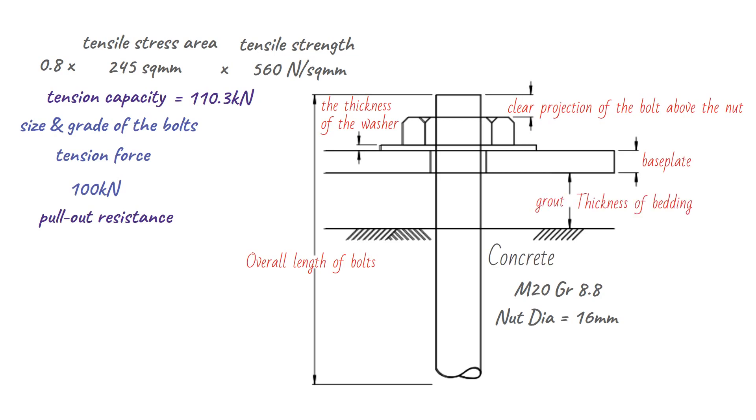For example, let's say we have an overall length of bolts of 600 mm, a clear projection of the bolt above the nut of 50 mm, and thicknesses of 3 mm for the washer, 30 mm for the base plate and 50 mm for the grout.